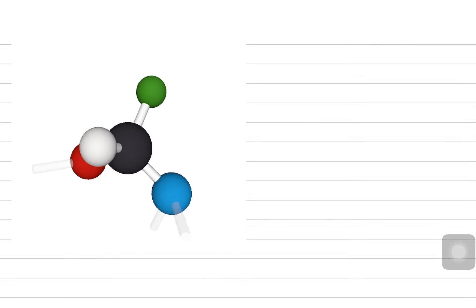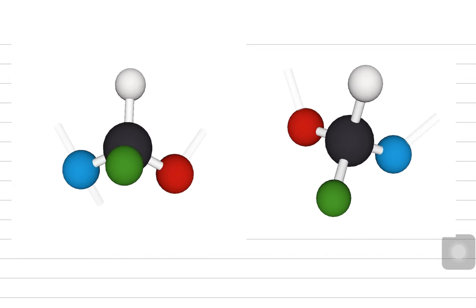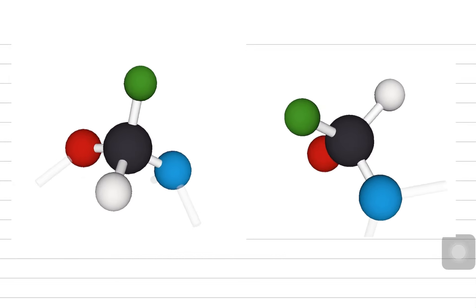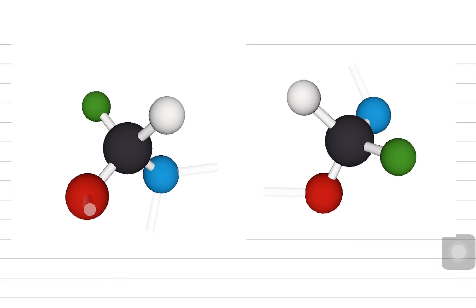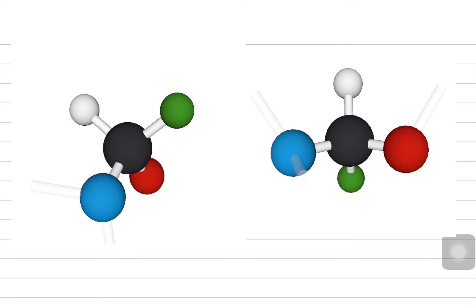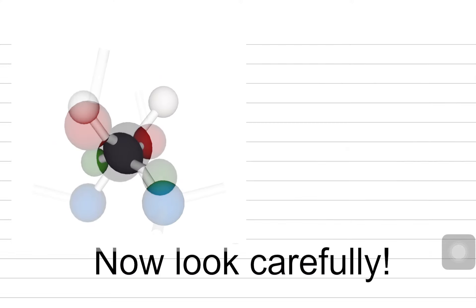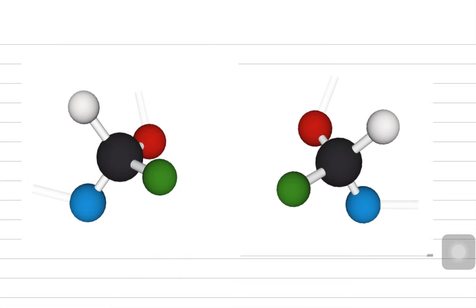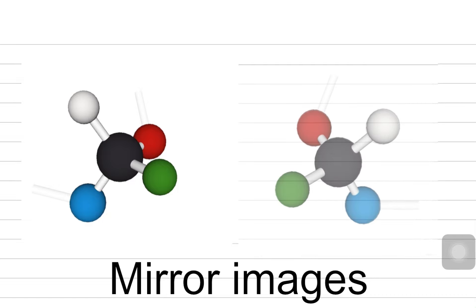Now imagine another structure on the right side — a very similar molecule. It's also a carbon atom bonded to four different groups. It looks exactly the same, it feels like there is no difference. But now look carefully — if I notice, they are mirror images of each other.